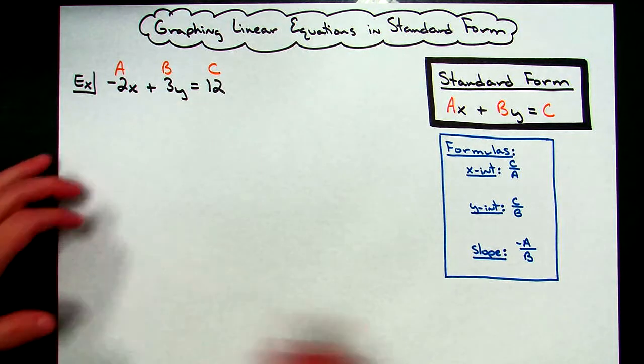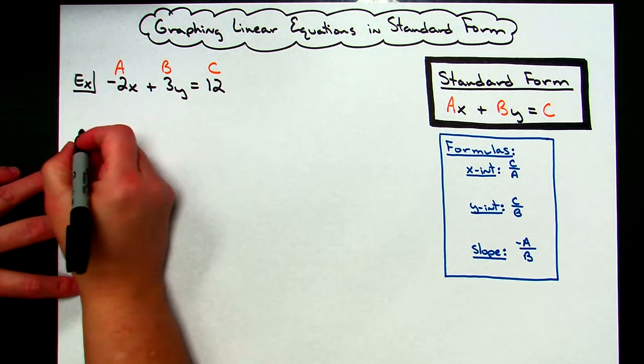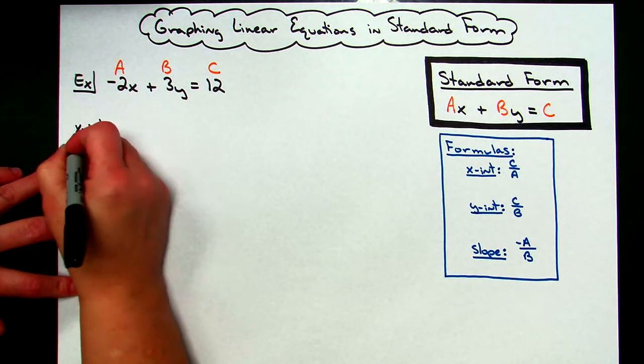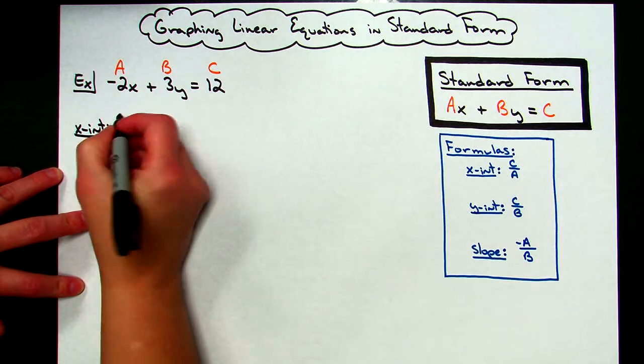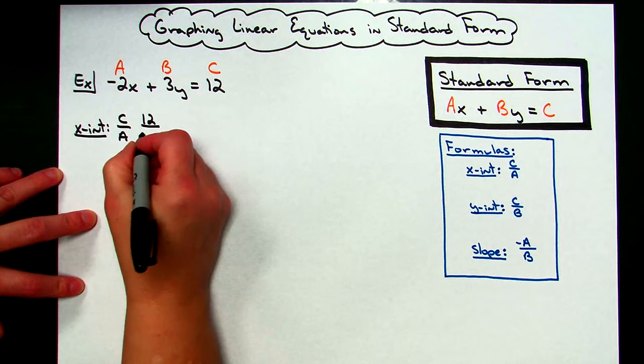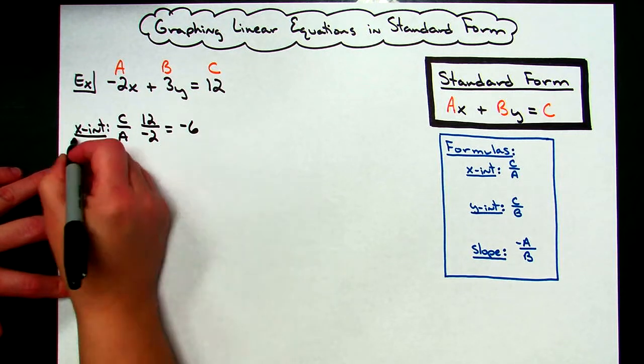Before I actually attempt to graph this, I'm going to go ahead and find all three of those very quickly. So for my X-intercept, the formula says C over A. My C is 12, my A is a negative 2, so 12 divided by negative 2 is a negative 6. So my X-intercept is going to be negative 6 on this graph.